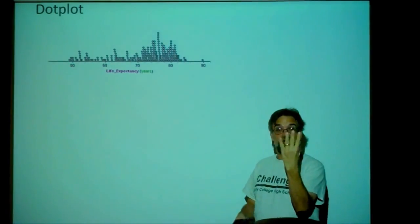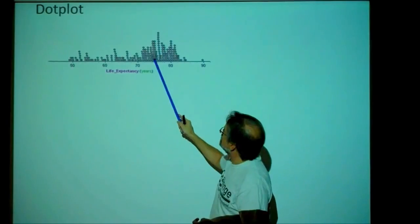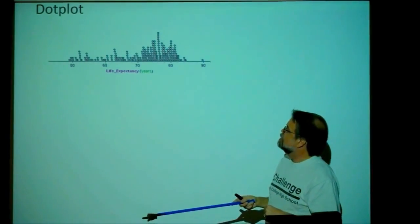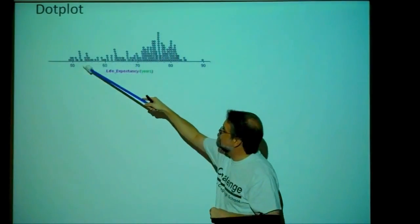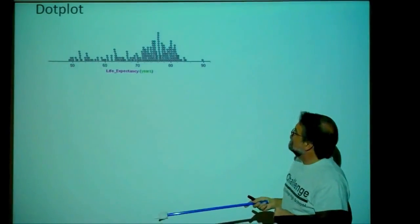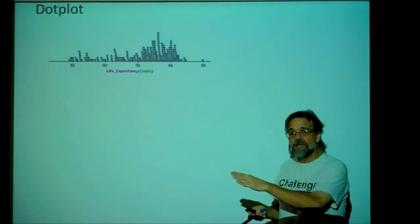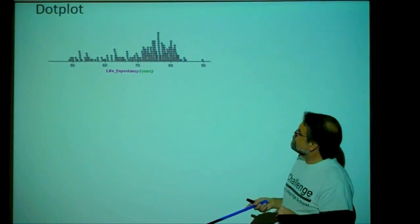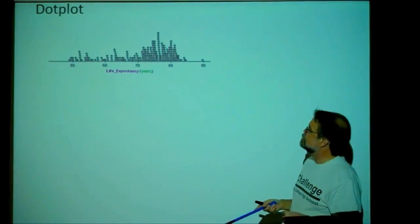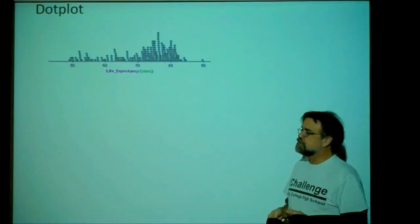What can we tell from this dot plot? The center of this data set is about 73–74. The spread goes from less than 50 to almost 90, so about 40 years. The shape — most of the data is here with a tail going to the left, so it's skewed to the left. Unusual features: we might have an outlier there, and this data set looks multimodal. When you have multimodal data, you should ask whether you're looking at distinct populations. Almost all the lower-life-expectancy countries are sub-Saharan African, suffering from AIDS and other problems, while the very high ones are mostly European.